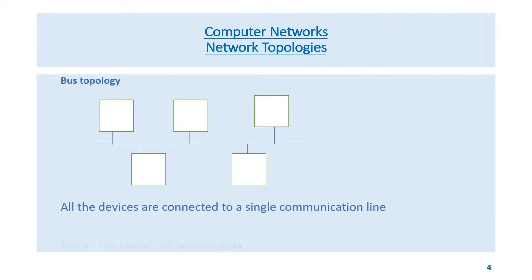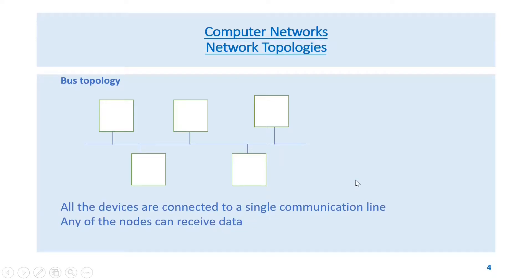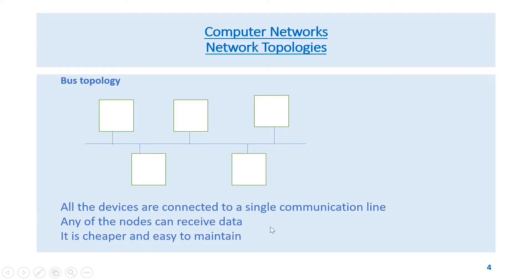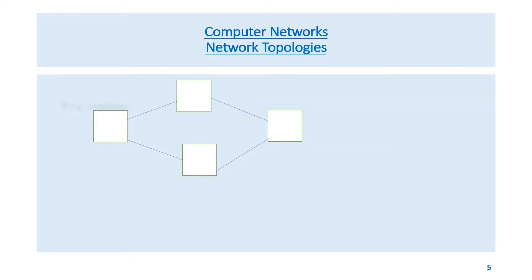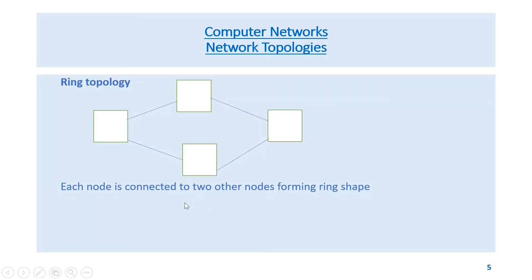In bus topology, all devices are connected to a single communication line called the bus. Any of the nodes can receive data. It is cheaper and easy to maintain.